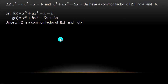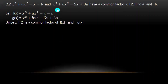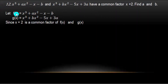This is the first step of the equation. x squared plus a x squared minus x minus b. x squared plus b x squared minus y x plus 3a. This is the first step. For x, g of x will be taken.